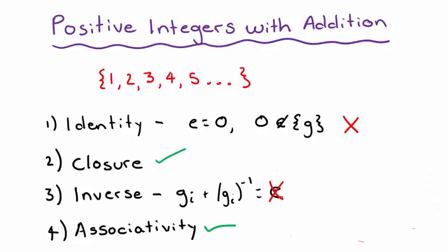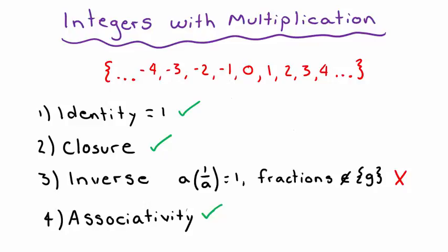You should have worked those examples out for yourself, but let's review the answers. For number 1, the positive integers with addition is not a group. The identity must be 0, but 0 is not contained in the set, so identity fails. For this reason, inverse also fails because we don't have an identity. For number 2, the integers with multiplication does a little better — the identity is 1, which exists in the set. However, we need a number such that a times its inverse equals 1, meaning the inverse must be 1/a, but fractions are not integers, so inverse fails.